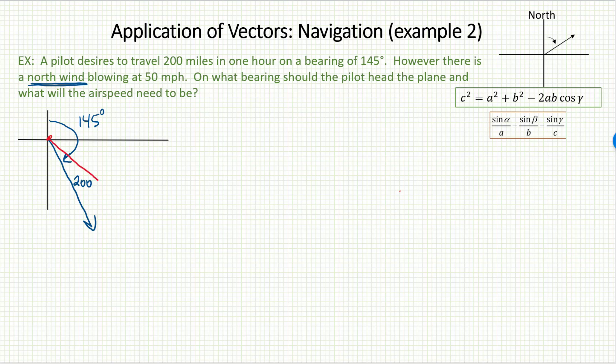So the idea here is the pilot is actually going to have to aim the plane somewhere over here so that when the wind interacts, the result is the direction and speed that the pilot wants to travel in. So this first vector is vector A, the airplane vector, and the second vector is vector W, the wind vector.